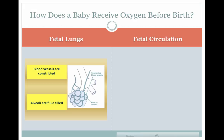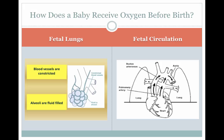In fetal circulation before birth, most of the blood from the right side of the heart is unable to enter the lungs due to the increased resistance to flow and the constricted blood vessels of the lungs. Most of the blood takes the lower resistance path and passes through the ductus arteriosus into the aorta.